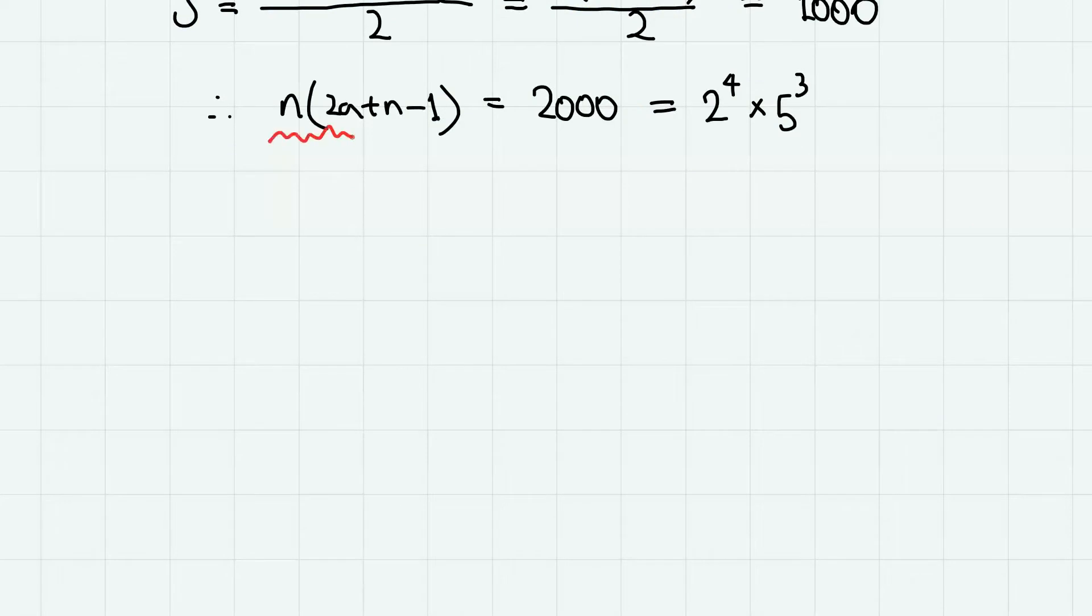Now notice that this product, n times 2a plus n minus 1, is always odd times even, which means that one is odd and the other is even. More specifically, if n is odd, then 2a plus n minus 1 is even, and when n is even, then 2a plus n minus 1 is odd, hence always odd times even.